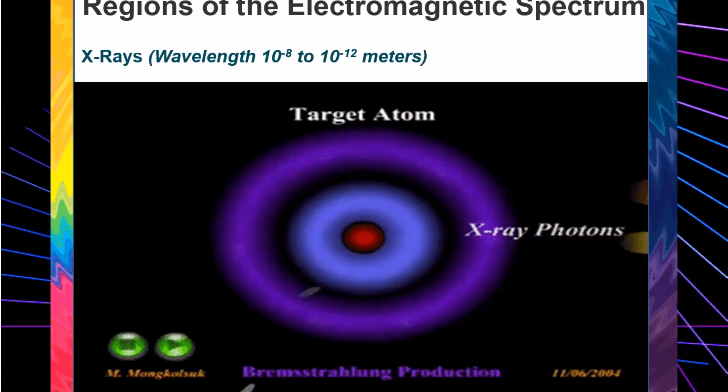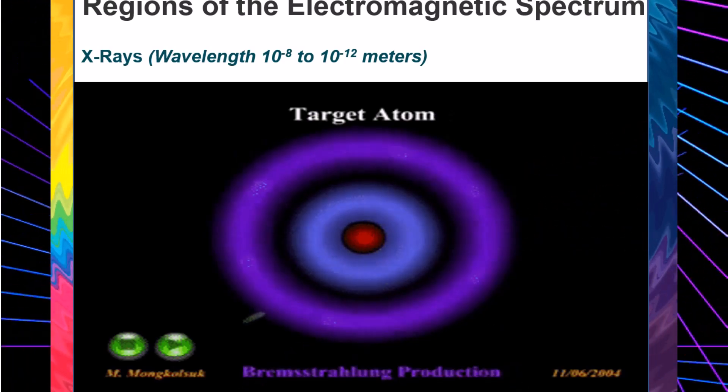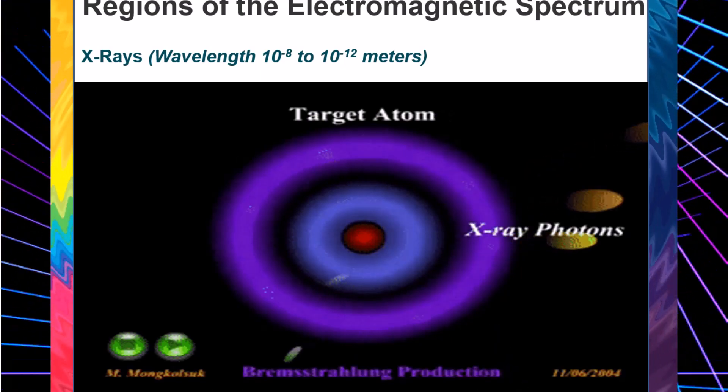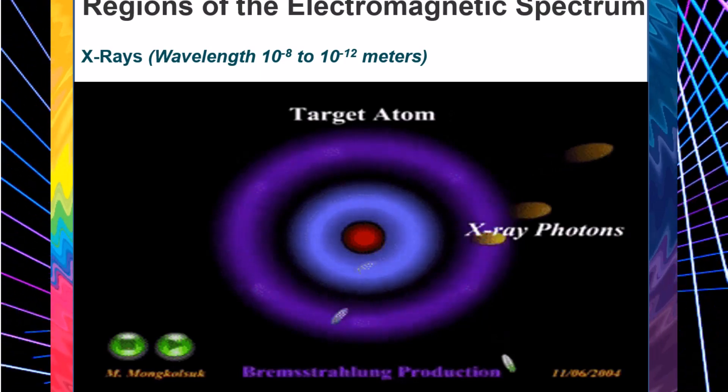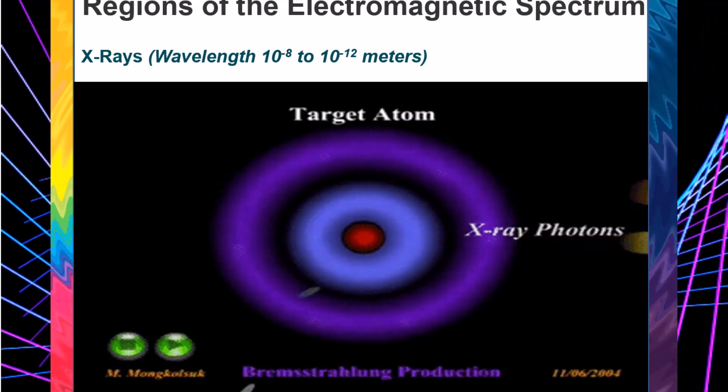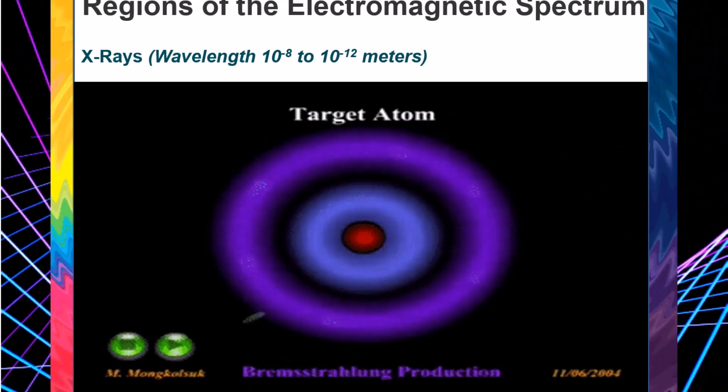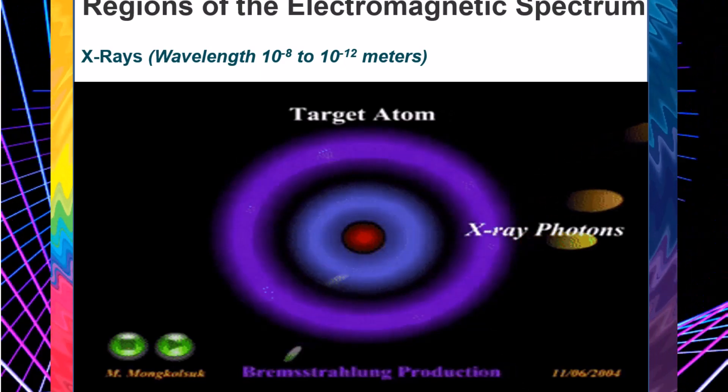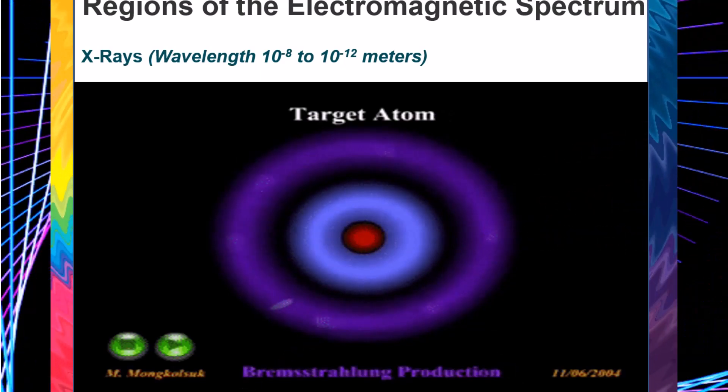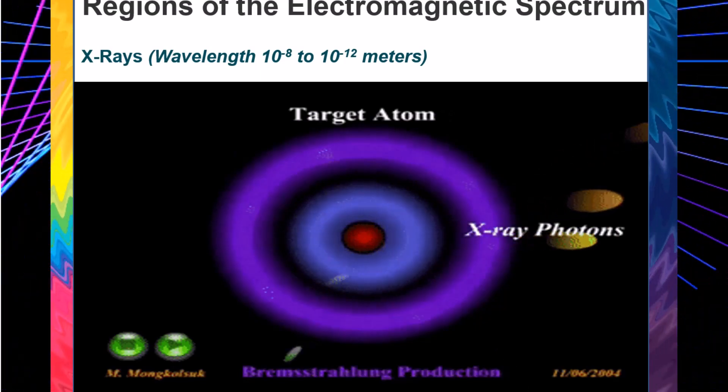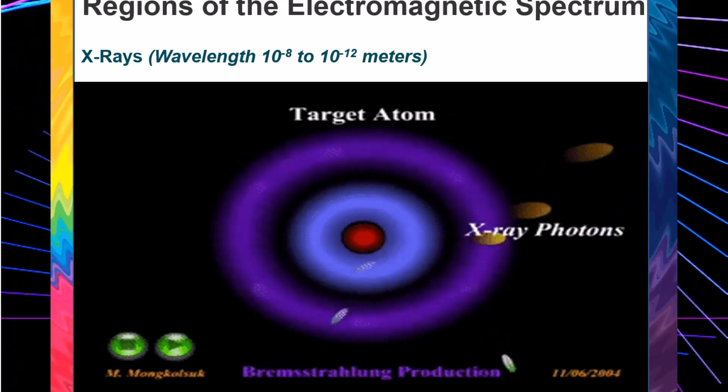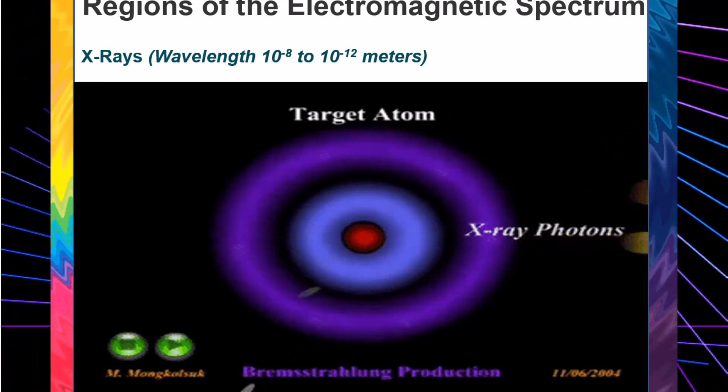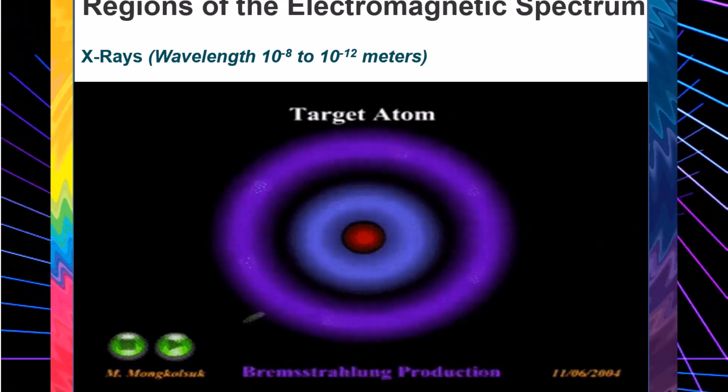X-rays, wavelength 10 to the negative 8 to 10 to the negative 12 meters. X-rays range in wavelength from 0.01 to 10 nanometers and are primarily generated from superheated gas from exploding stars and quasars. X-rays are able to pass through many different types of materials. X-rays are commonly used for medical imaging and for inspecting cargo and luggage. Similar to gamma rays, the Earth's atmosphere blocks X-ray radiation.